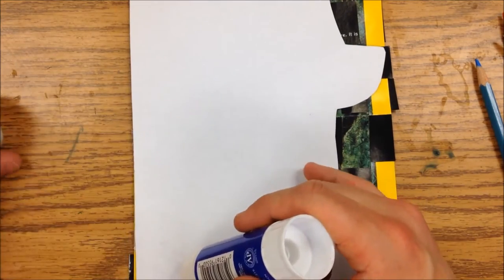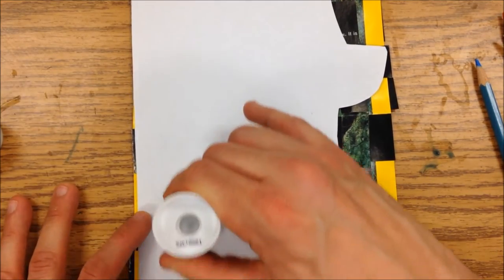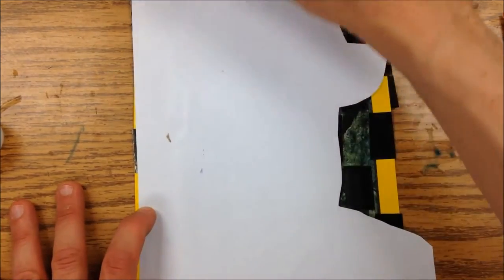I'm just going to flip it over and take a glue stick. I know it's going to go over the edge a little bit, so I'm not going to glue right on that. I'll just go across it like this.